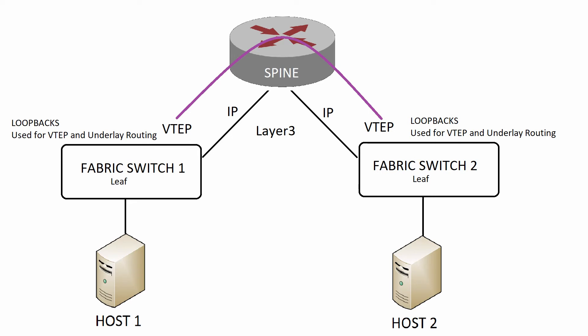The next thing to think about is how does broadcast traffic get over these layer 3 links? VXLAN handles this with two methods: multicast or ingress replication. With ingress replication, it takes the broadcast frame, replicates it into unicast, and fires it out to all of the other VXLAN tunnel endpoints — creating more bandwidth on the links, which isn't ideal. Sometimes, however, people can't introduce multicast to their network. VXLAN uses multicast to handle BUM traffic, which stands for broadcast, unknown unicast, and multicast.